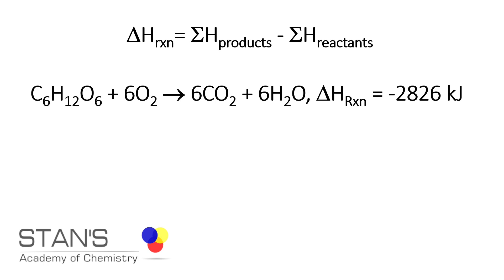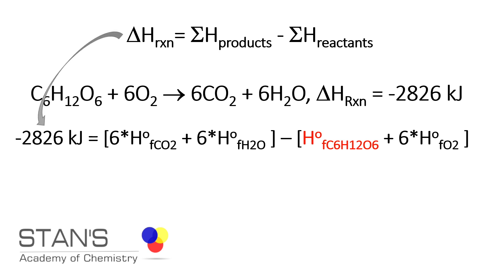Converting delta H reaction equals sum of the enthalpy of the products minus reactants, this is what we get. Delta H reaction, which is enthalpy of combustion, is minus 2826. Sum of the enthalpy of products is six times enthalpy of formation of carbon dioxide plus six times enthalpy of formation of water.